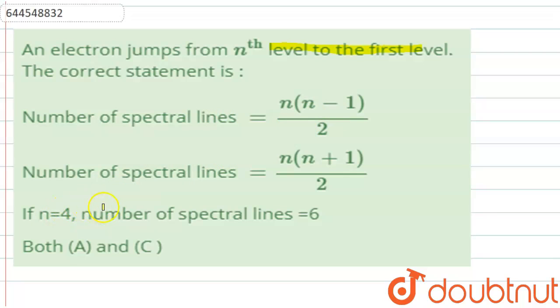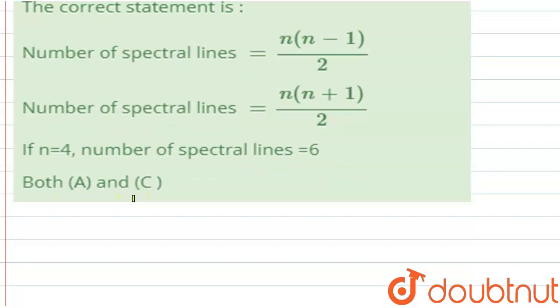The third option is, if n equals 4, then the number of spectral lines is 6. The last one is both A and C are correct.